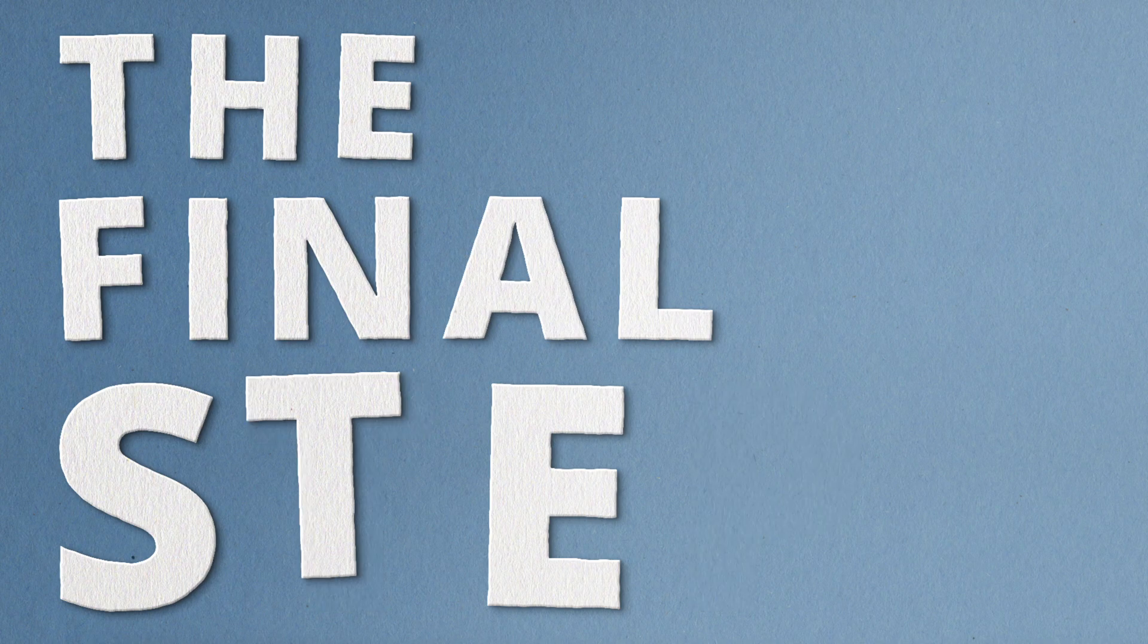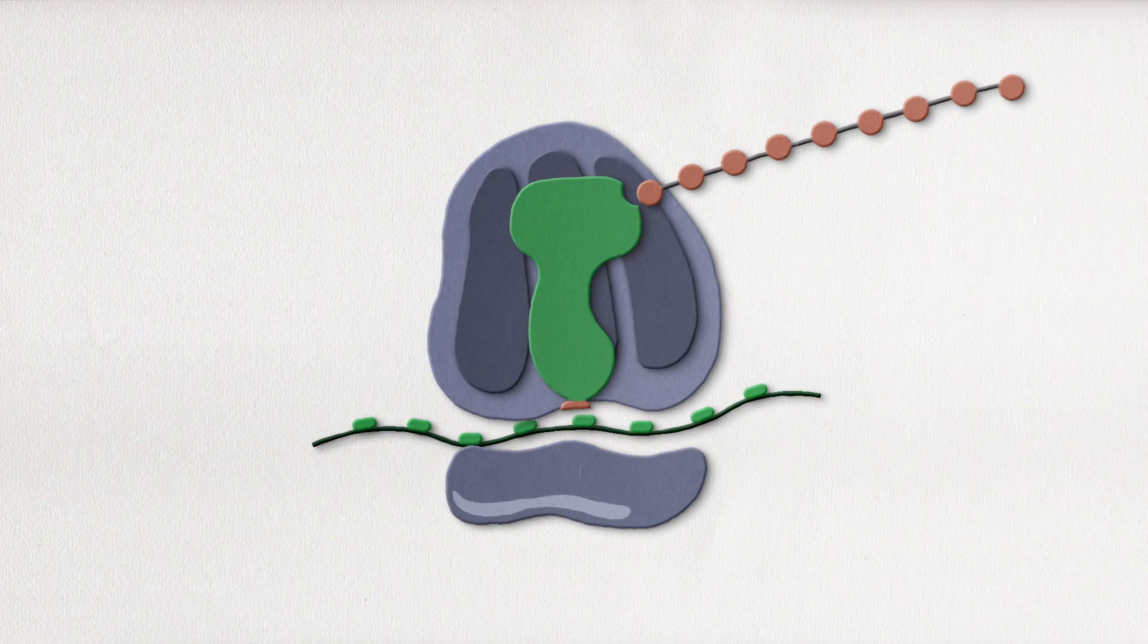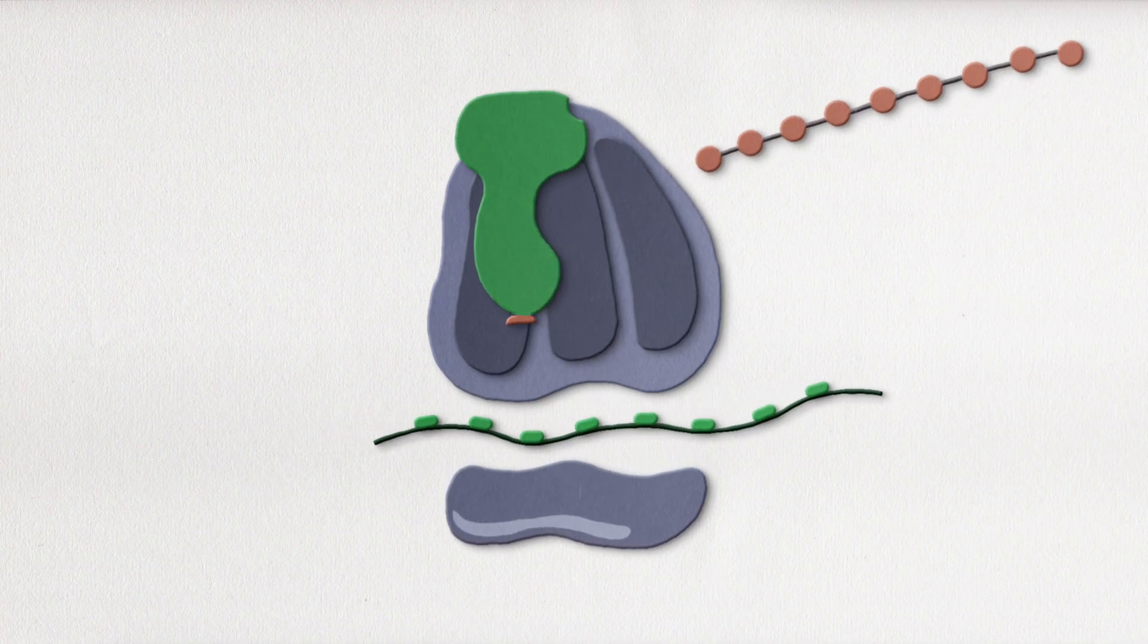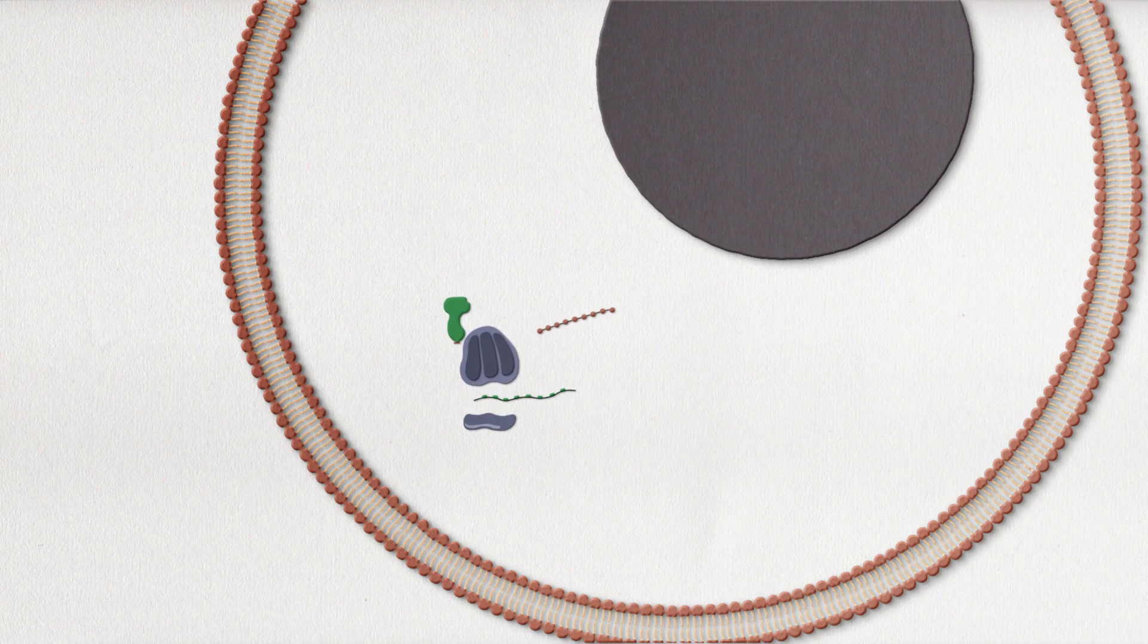The final step, termination. This is when the protein party is over. The ribosome sandwich breaks apart and the new protein is released into the wild. And by wild, I mean the designated part of the cell that it goes to. Isn't science beautiful?